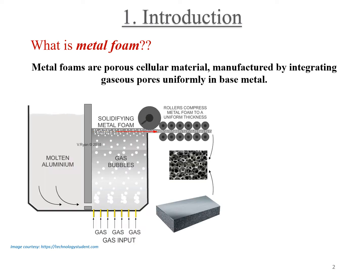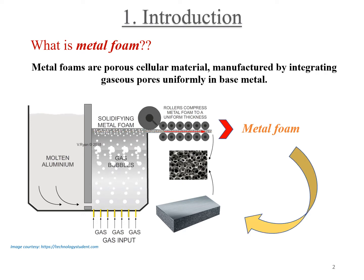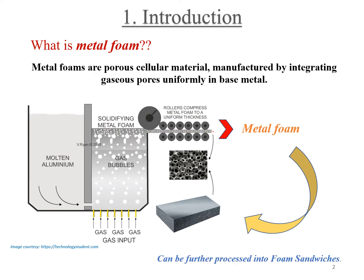The most common method of preparing this material is shown in the animation, wherein certain blowing agents are being subjected to a molten aluminum pool. These blowing agents decompose in-situ; as a result, the final product — the metal foam — has pores within it. Further, this metal foam can be sandwiched between two solid sheets for better stability and strength.